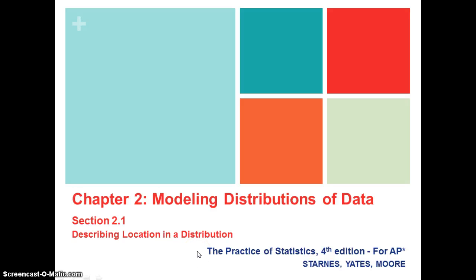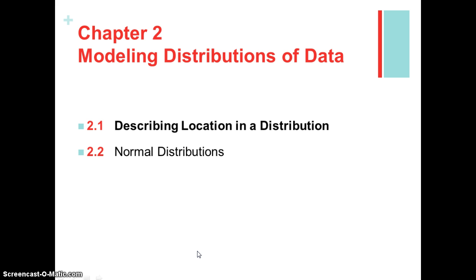Hi AP Statistics students, this is Ms. Skokin and we're going to be taking a look at Chapter 2, Modeling Distributions of Data. In Chapter 1, we focused on looking at individuals within a data set, looking at categorical and numerical variables, making sure that we could allow the distribution of the variables to tell a story through a graph and through numerical descriptions. In Chapter 2, we're going to be focusing on an individual within a data set. We want to know where they stand and that's called describing location in a distribution.